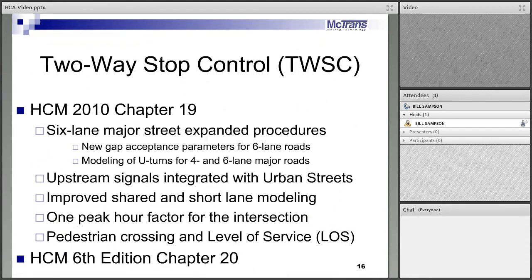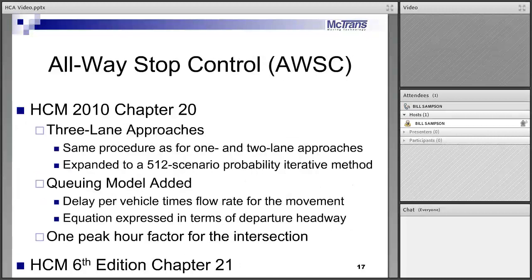Two-way stop control had some changes in 2010 but no changes in the 6th edition. We can now model stop-controlled approaches on six-lane major streets. The upstream signal and platooning effect on the stop control approach is modeled with the flow profile, replacing the old model. Same with all-way stop — expanded to model three-lane approaches and added the 95th percentile queue equation, but no changes in the 6th edition.